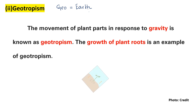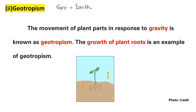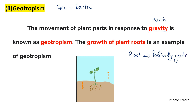The movement of plant parts in response to gravity is known as geotropism. The growth of plant roots is positively geotropic, meaning roots grow downward toward gravity. The shoot of a plant is negatively geotropic, growing upward away from gravity.